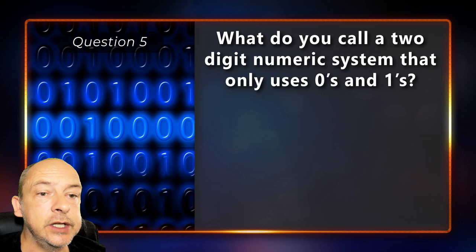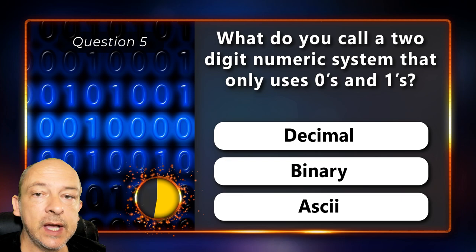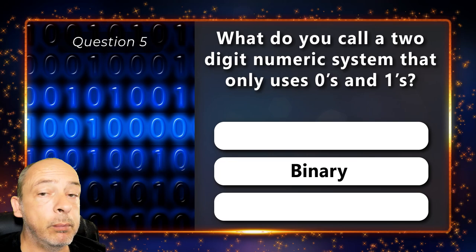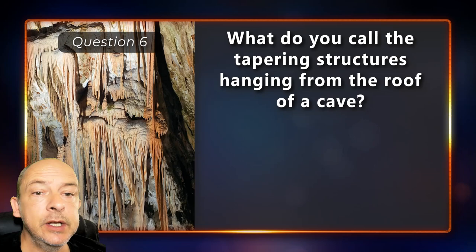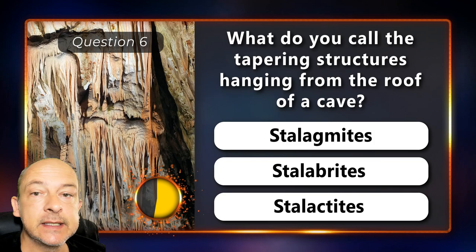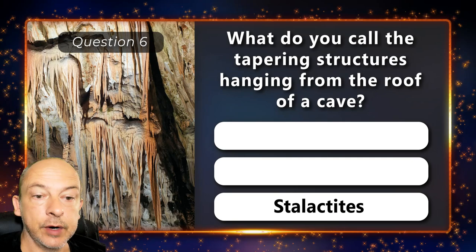What do you call a two-digit numeric system that only uses zeros and ones — is it decimal, binary or ASCII? Binary. What do you call the tapering structures hanging from the roof of a cave — is it stalagmites, stalabrites or stalactites? The correct answer is stalactites.